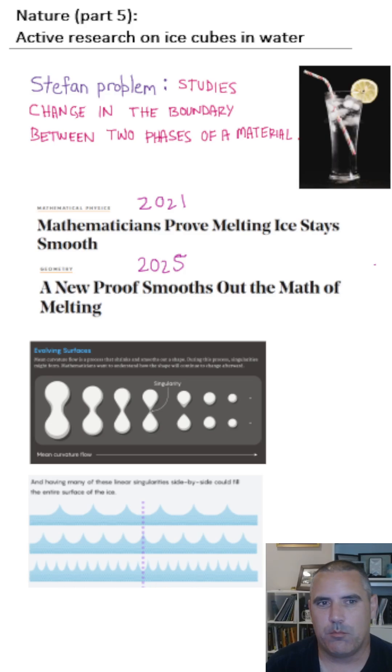There's a so-called Stefan problem—a Slovenian physicist who in the 1890s gave a set of differential equations that seemed to model this phase transition boundary question pretty well.